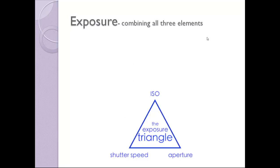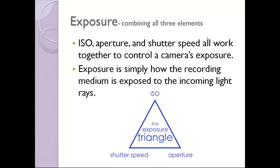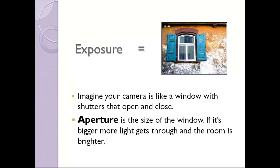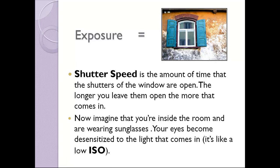Exposure. Combining all three elements — ISO, aperture, and shutter speed — all work together to control a camera's exposure. Exposure is simply how the recording medium is exposed to the incoming light. Imagine your camera is like a window with shutters that open and close. Aperture is the size of the window; if it's bigger, more light gets through and the room is brighter. Shutter speed is the amount of time that the shutters of the window are open; the longer you leave them open, the more light comes in. Now imagine that you're inside the room wearing sunglasses — your eyes become desensitized to the light that comes in. It's like a low ISO.